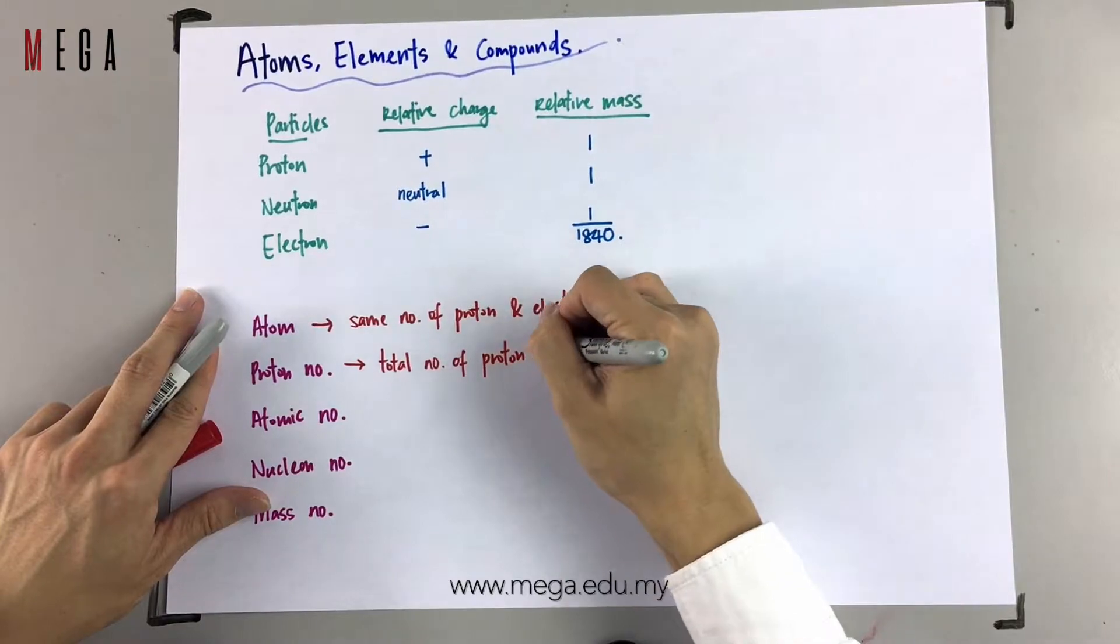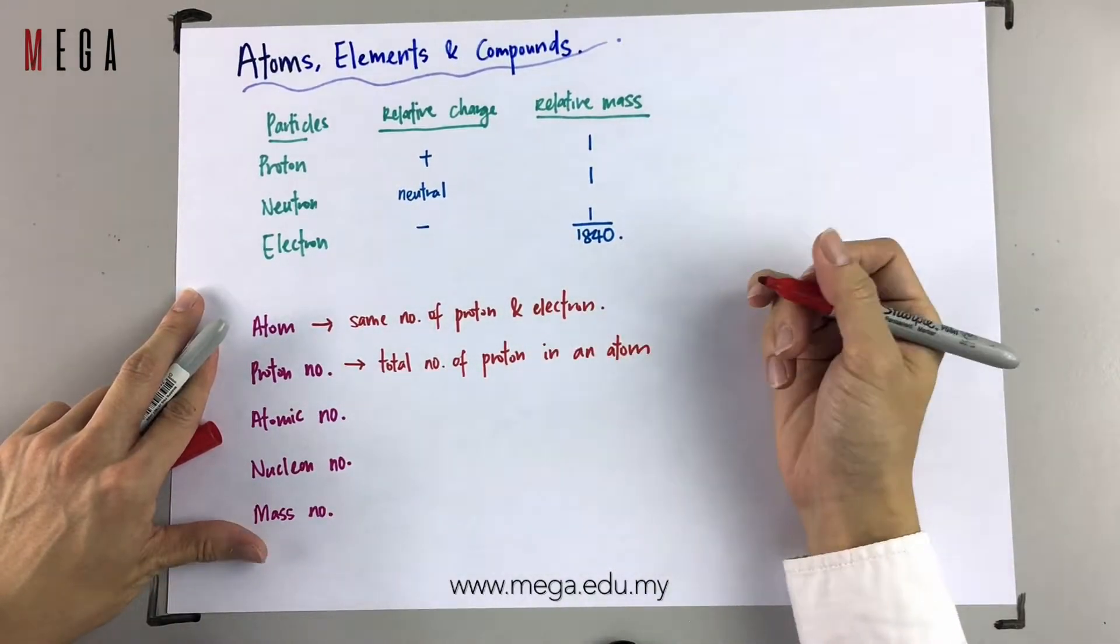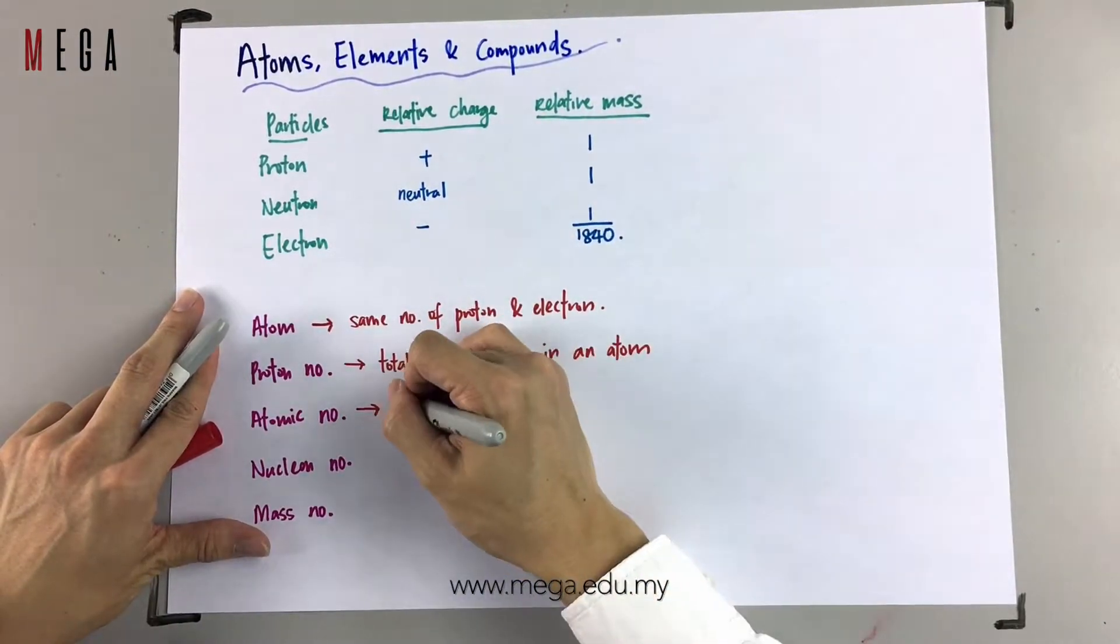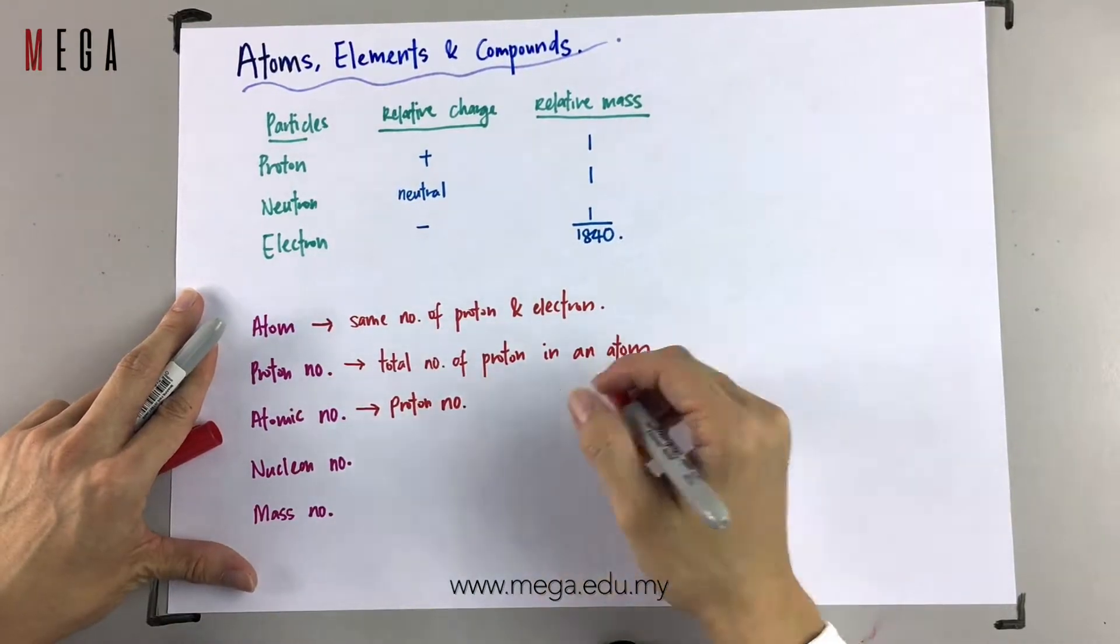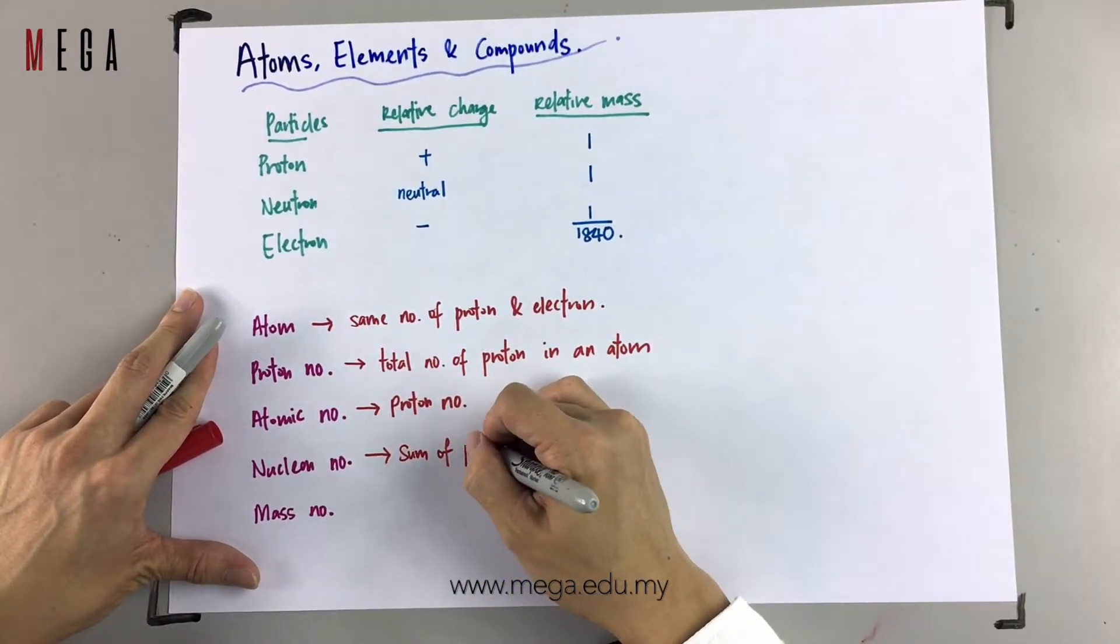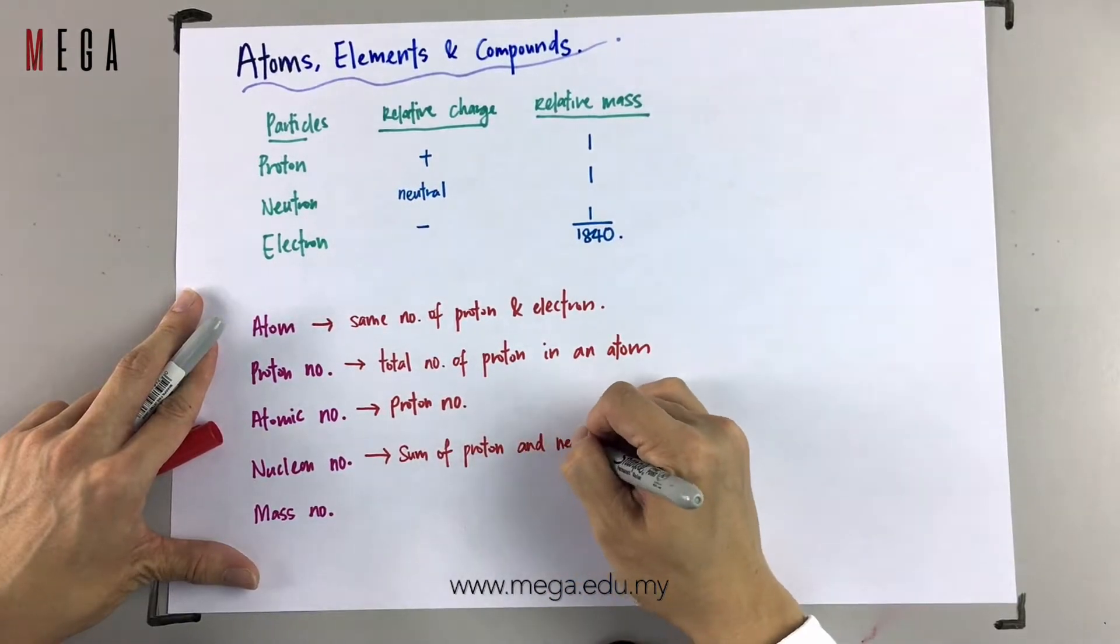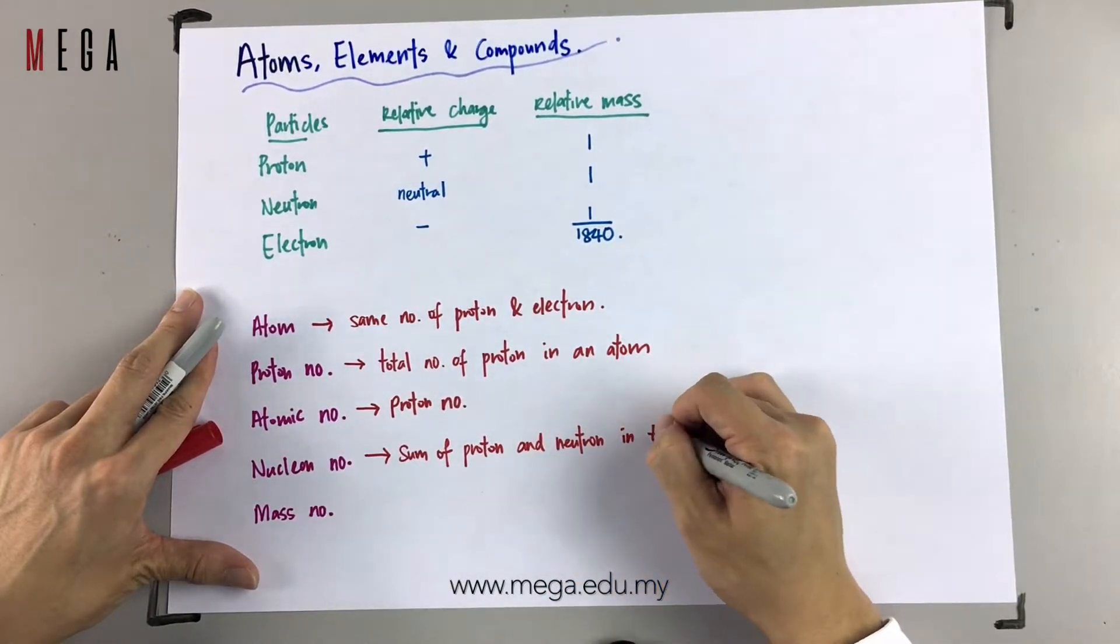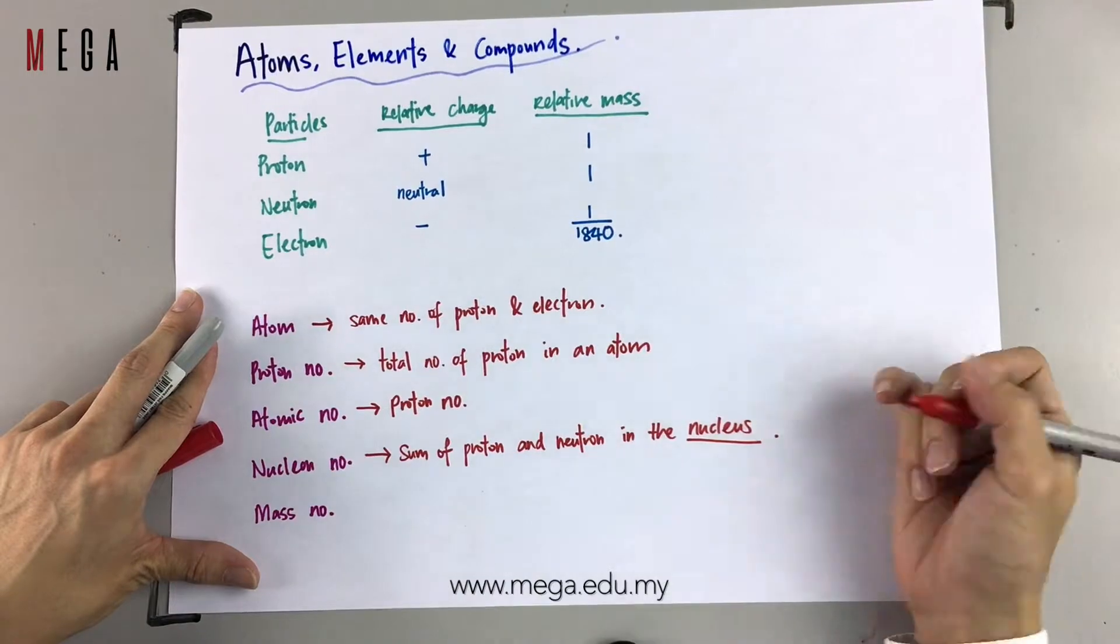Proton number means the total number of protons in an atom. Atomic number is proton number. Whereas neutron number means the sum of proton and neutron in the nucleus. Remember, you must mention the keyword: nucleus.